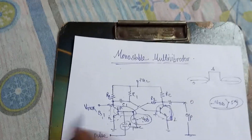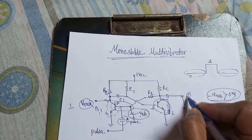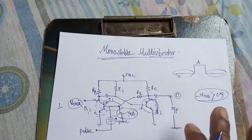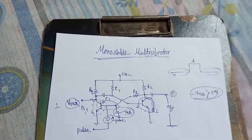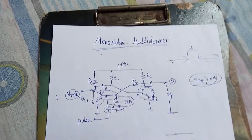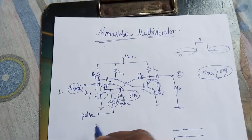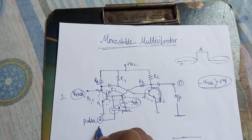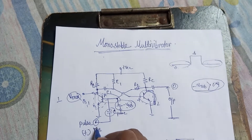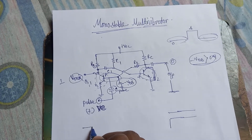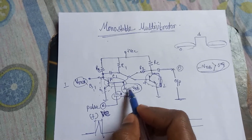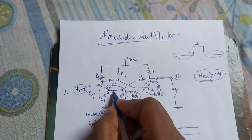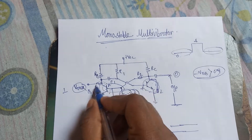A positive voltage is applied to the base of Q2, so Q2 is not in cutoff — it goes into the saturation region. If Q2 is in saturation, the output voltage here is zero. So the output at Q2 is zero and the output at Q1 is maximum (one). This is the stable state. Now, if we apply a positive triggering here — a pulse with small time duration but high amplitude greater than VBE.